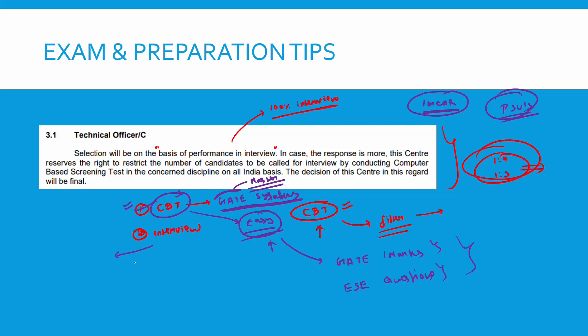Coming to the interview — majorly for mechanical, what I am saying is common. You should have a strong interest in four to five subjects. For example, for mechanical: material science, thermodynamics, heat transfer, strength of materials, and fluid mechanics. In this area, you should be very strong. If you are studying for GATE, that is fine — but in the interview you should have deep knowledge of those four to five core subjects.